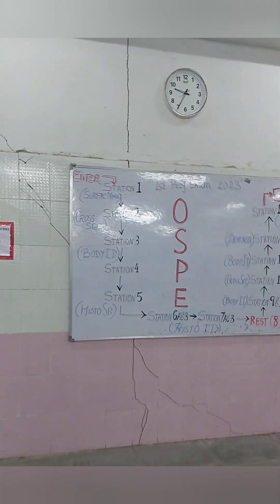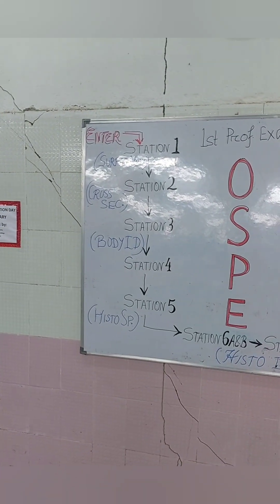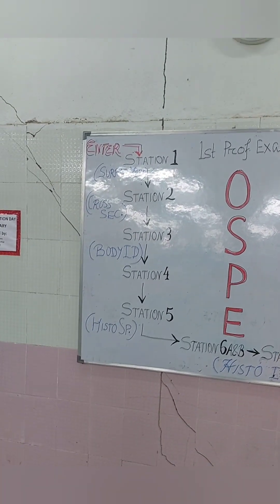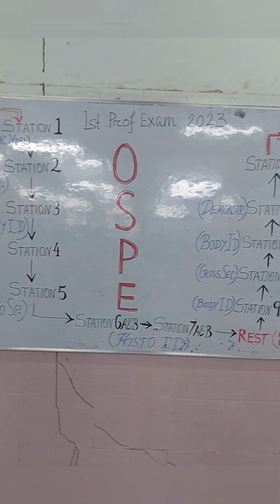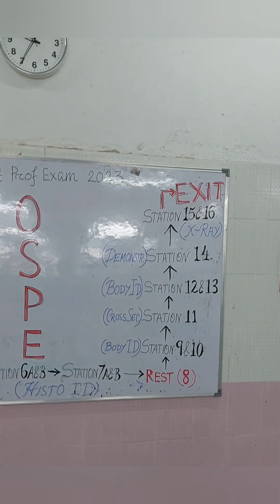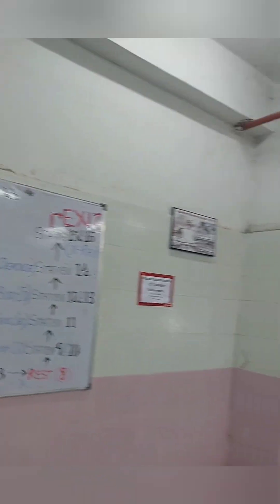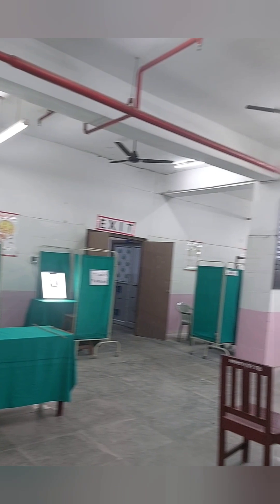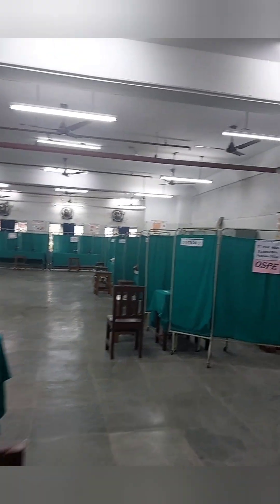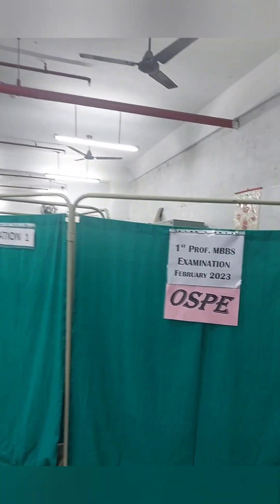This is the model of OSPE stations — students will enter through this gate, start from station number 1, and then one by one they will proceed. After completing all stations they will exit through the exit gate. This is the submission desk where they will submit the answer scripts. I am now showing you all the stations — we have arranged station number 1 to station number 16.